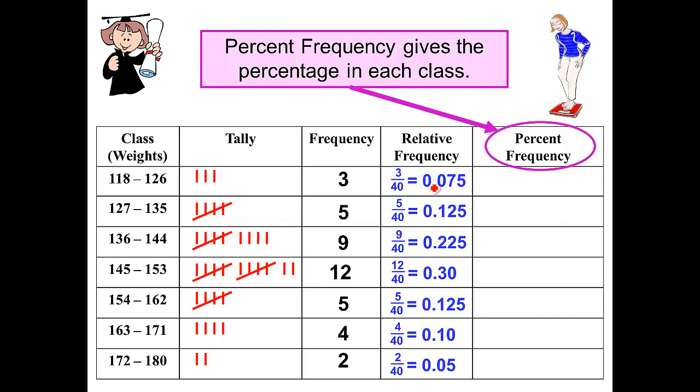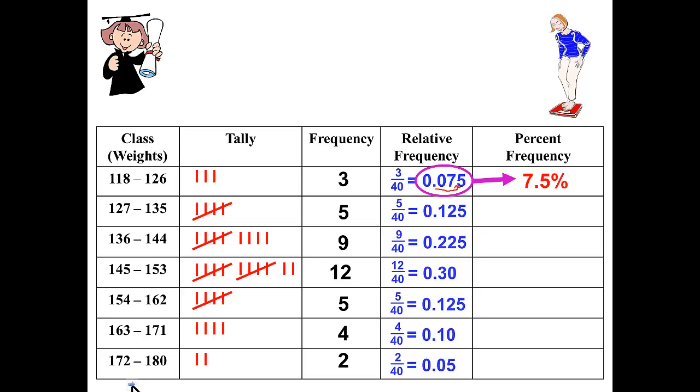We will take the decimal from here, moving two places to the right and move our decimal here. That will change that number to 7.5%. We move our decimal from here to there, and that will give us 12.5%. Moving our decimal from here to in between the 2 and the 5 gives us 22.5%. And here's why we added the zero, because we need to move two places. If you hadn't added the zero before, you can stop and do that right now. So we're going to move it two places to the right, and that becomes 30%.